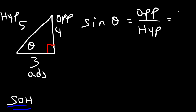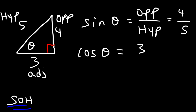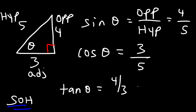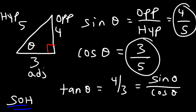Now let's apply the same thing to find the cosine ratio. Cosine is adjacent over hypotenuse, so the adjacent side is 3 and the hypotenuse is 5, giving cosine theta = 3/5. Tangent equals opposite over adjacent, so it's 4/3. You can also find tangent by dividing sine by cosine: 4/5 divided by 3/5 — the 5s cancel, giving 4/3.